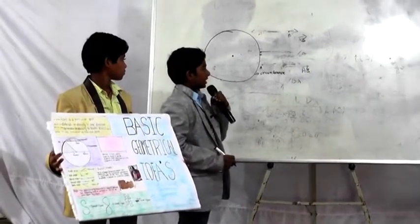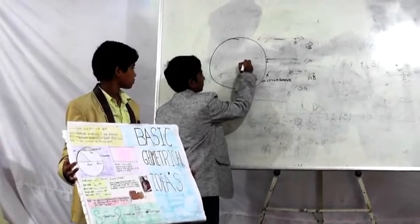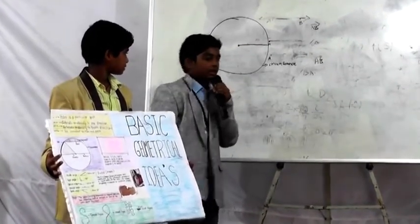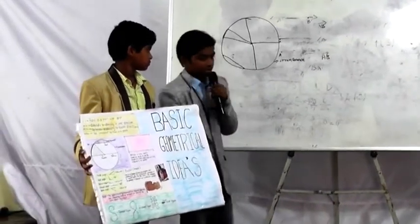The line which starts from the center and ends at the boundary of the circle is known as the radius. The line which divides the circle into two equal parts is known as the diameter. The area enclosed is known as the segment.